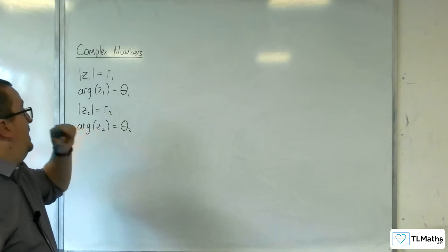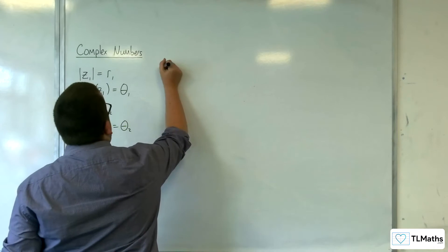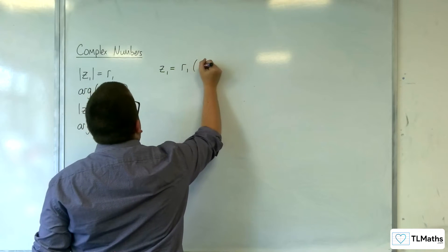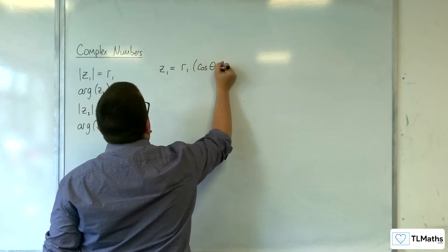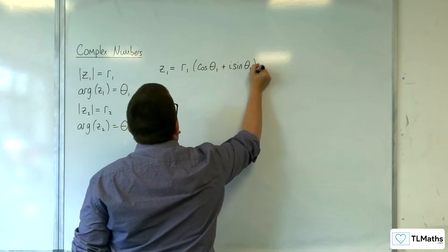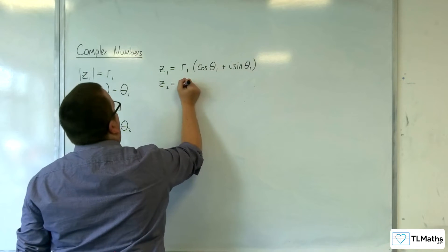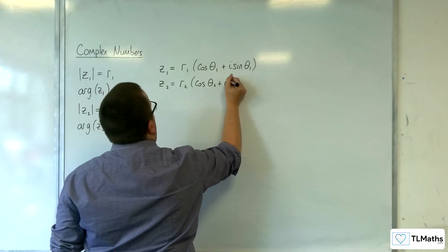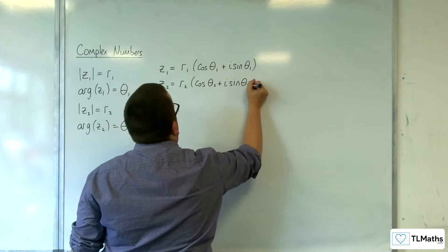So that means that we can write Z1 and Z2 in modulus argument form. So Z1 would be R1 times cosine of theta1 plus i sine of theta1, and Z2 would be R2 cosine of theta2 plus i sine theta2.